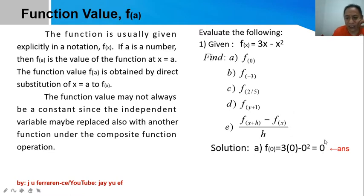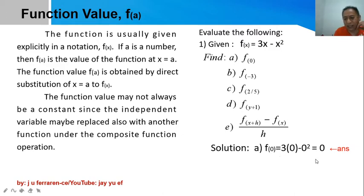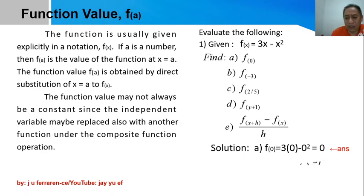So the value is equal to 0. This is the value of y and this is the value of x, so if you pair them you have a point with coordinates (0, 0) — that is the origin. That is the function value defined in part a.